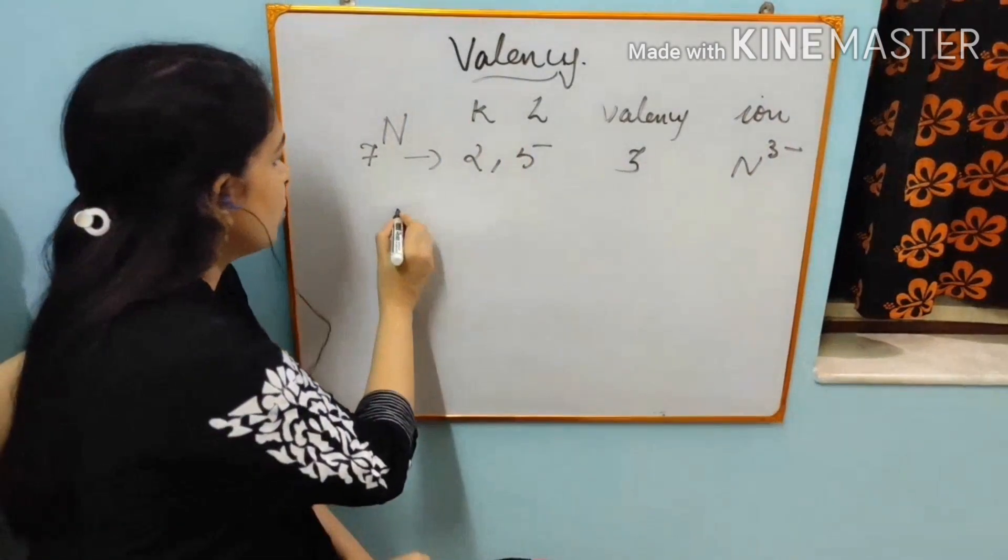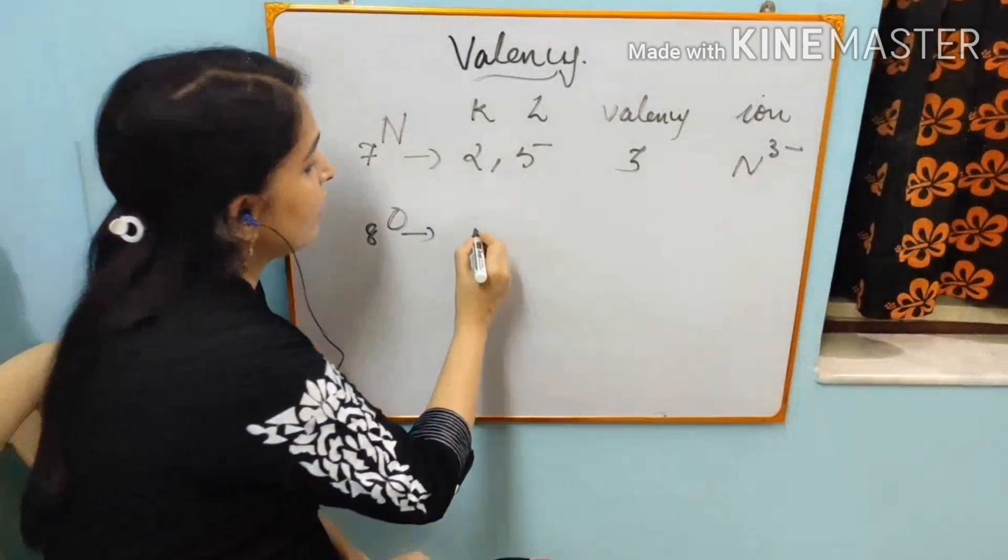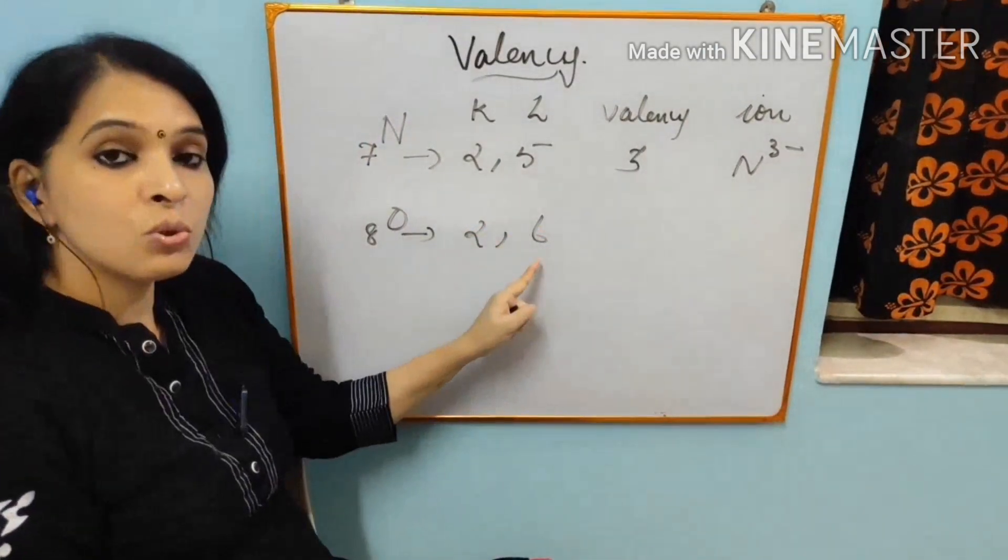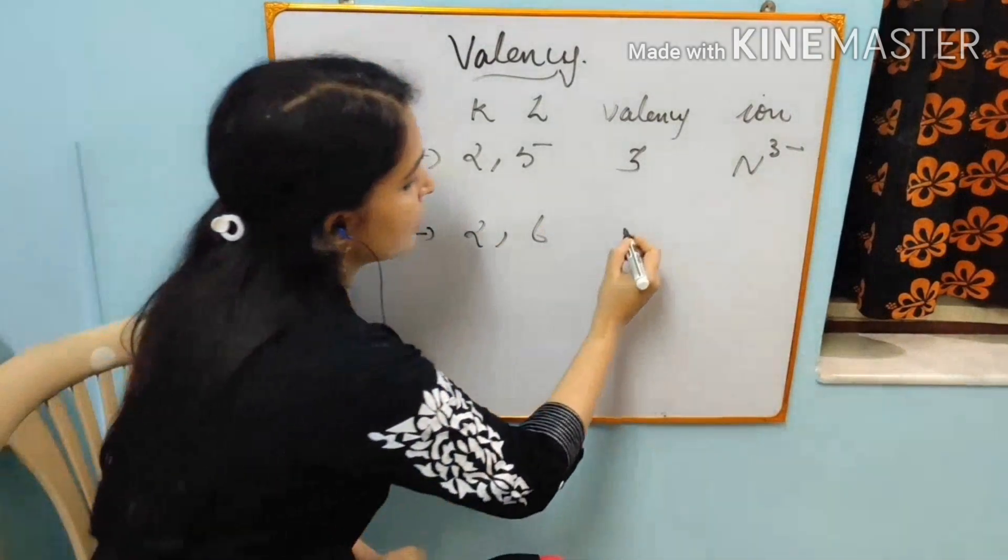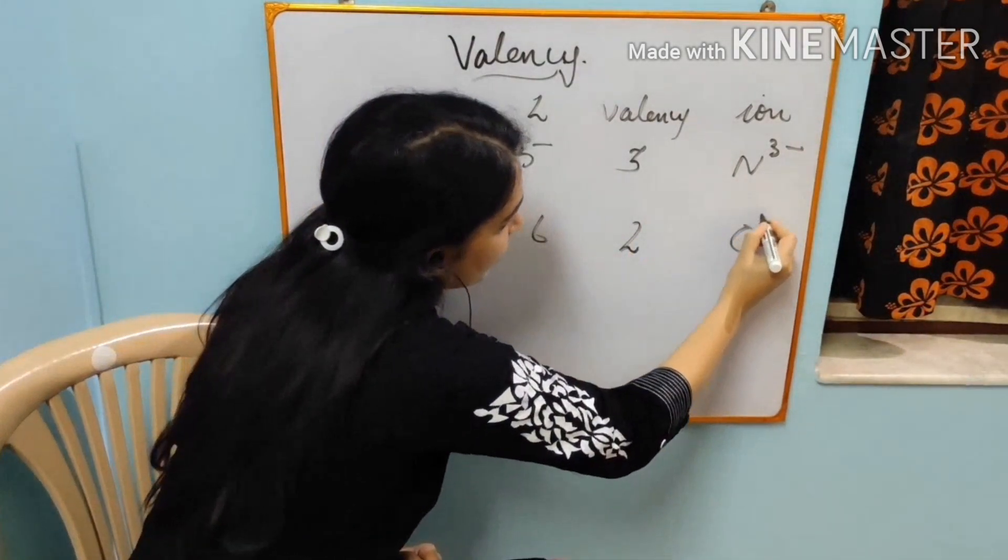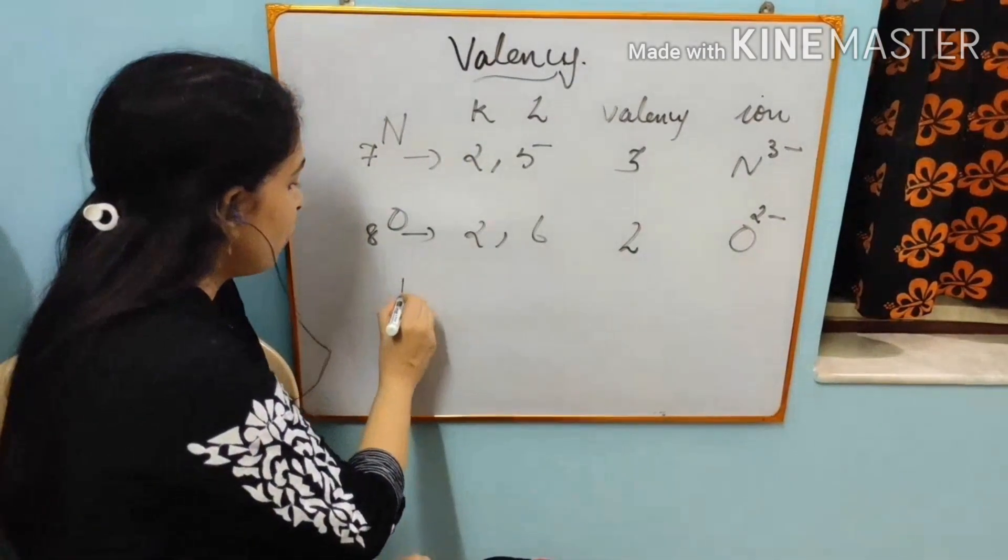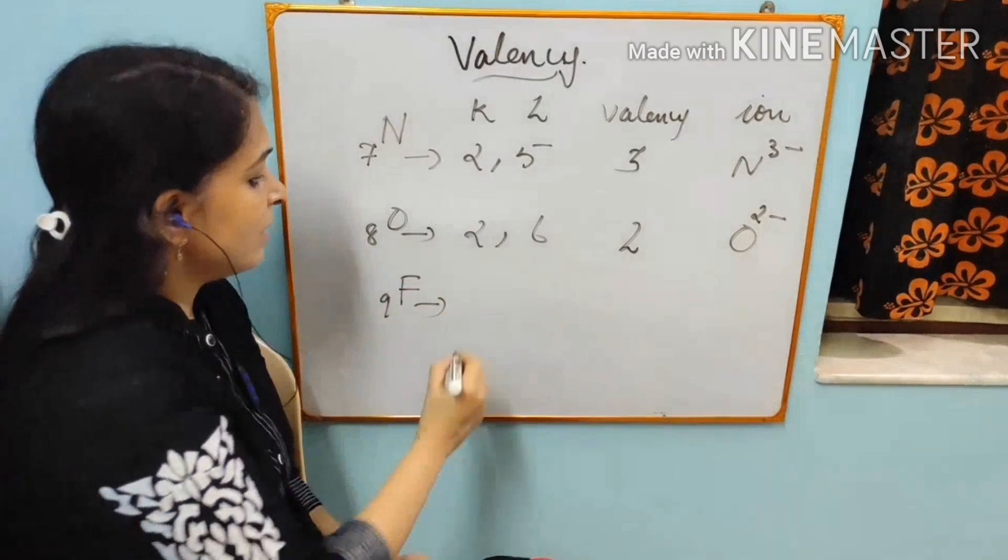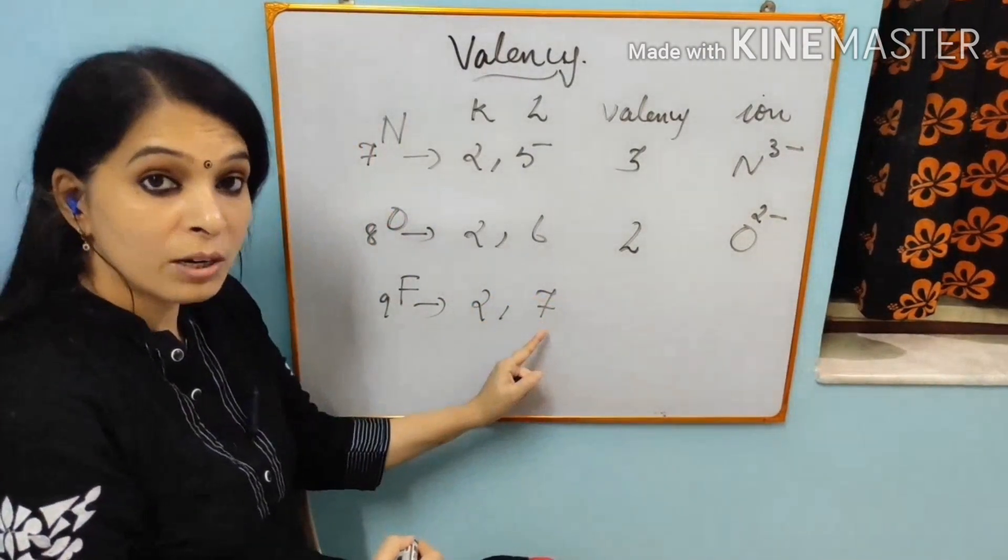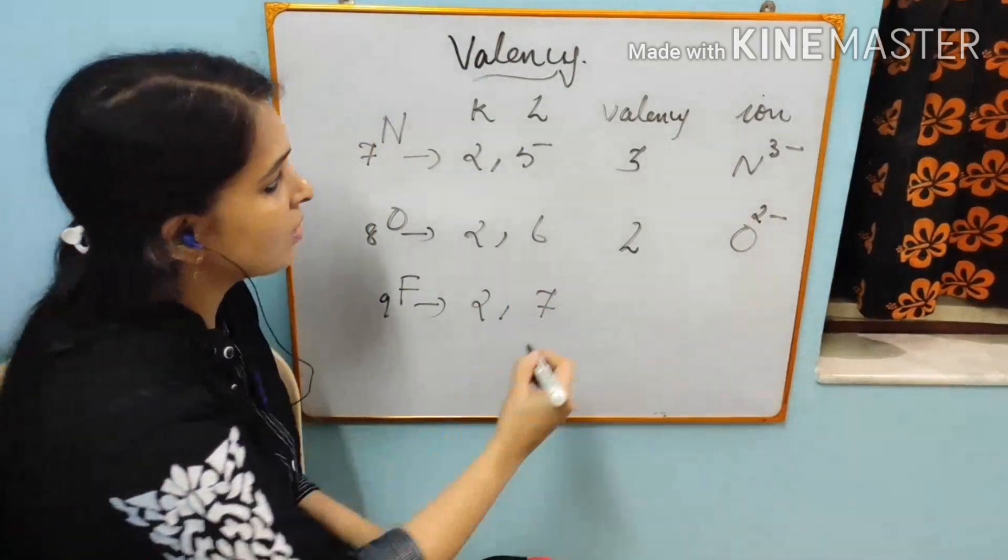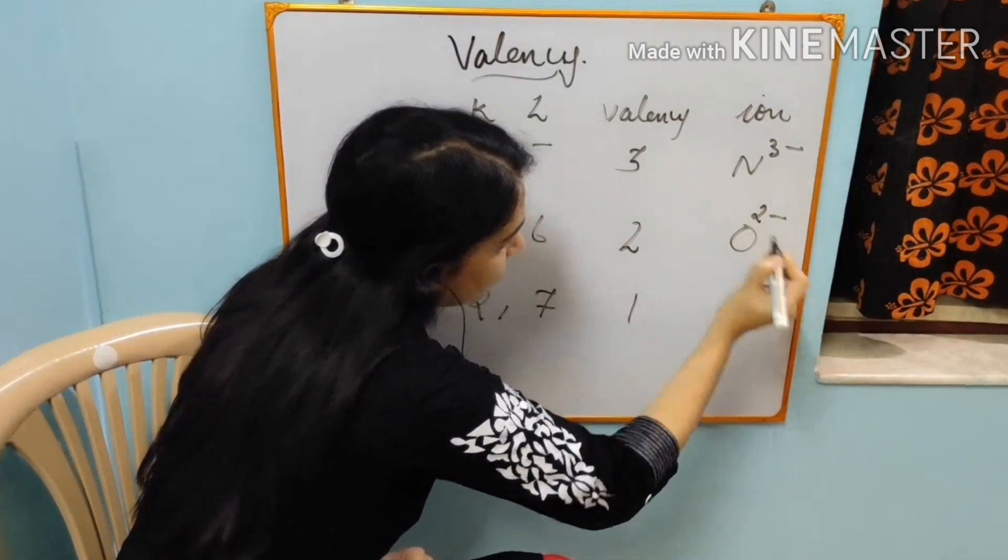Next is oxygen, 8. Its electronic configuration is 2, 6. Oxygen needs two more electrons to complete its octet. So its valency is 2. And it will become O2-. Next, I am writing fluorine. It is 9. Its electronic configuration is 2, 7. And it needs one more electron to complete the octet. So its valency is 1. And it will become F- ion.